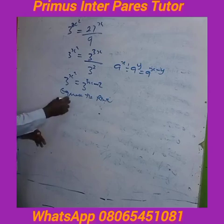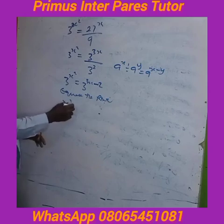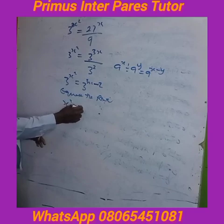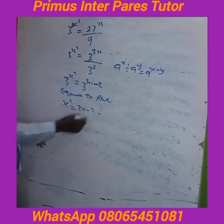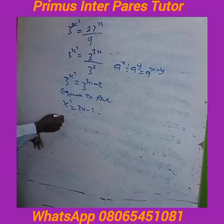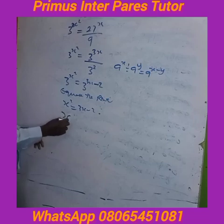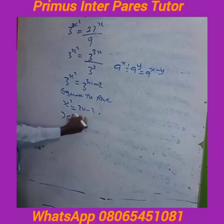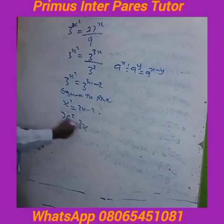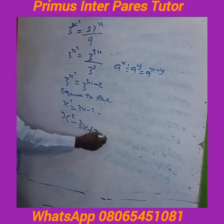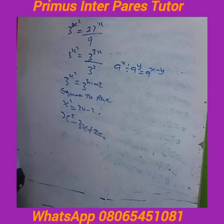So you have s squared equal to 3x minus 2. Then you can write this as s squared minus 3x plus 2 equal to zero — bring this term over. From here, you factorize.